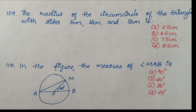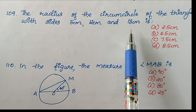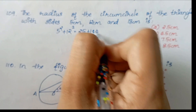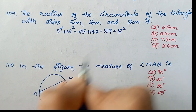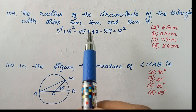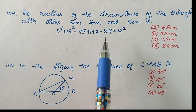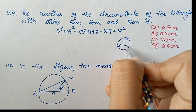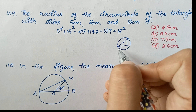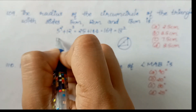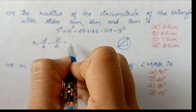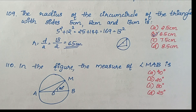Question 109: Find the radius of the circumcircle of a triangle with sides 5 cm, 12 cm, and 13 cm. Since 5² + 12² = 25 + 144 = 169 = 13², it is a right-angled triangle. For a right-angled triangle, the circumradius equals half the hypotenuse: R = 13/2 = 6.5 cm. Option B is correct.